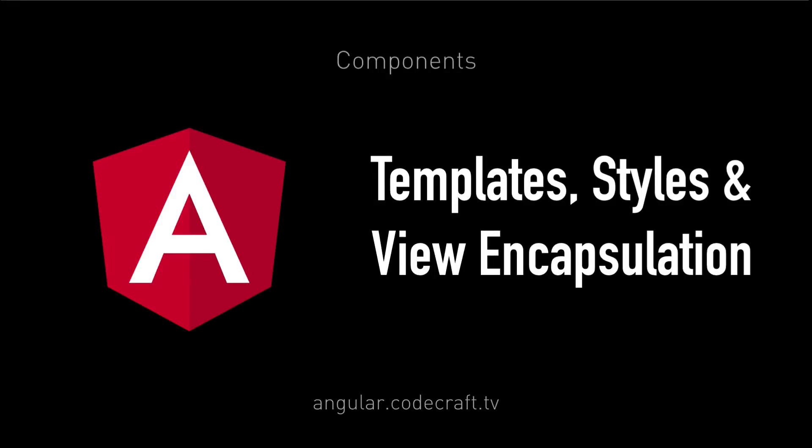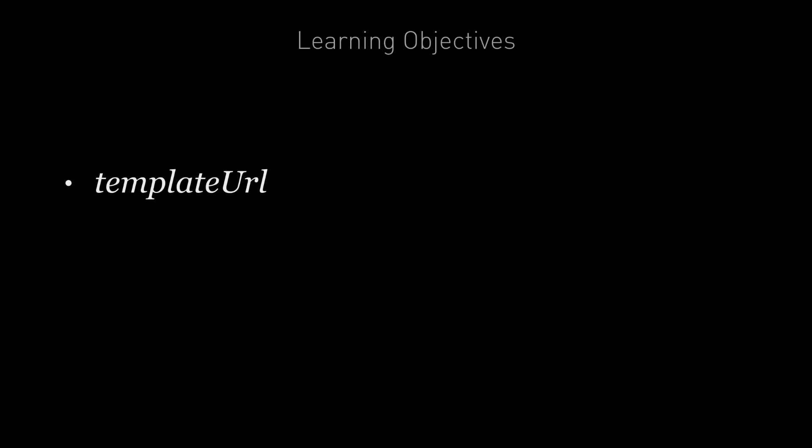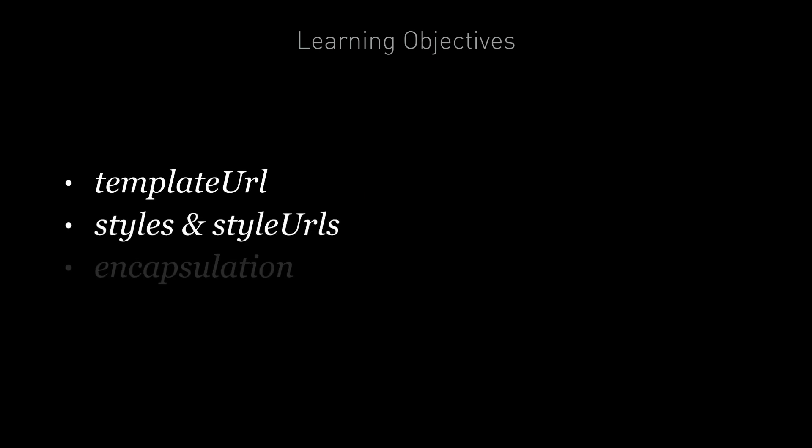We've covered the basics of the component decorator in the quick start. We explained how decorators work and both the template and selector configuration properties. In this lecture we're going to go through a number of other configuration properties including templateUrl, styles, styleUrls, and encapsulation. In a later section on dependency injection we're going to cover two other ways of configuring components with the providers and viewProviders properties.